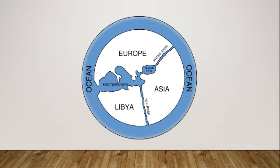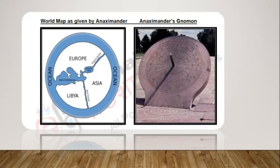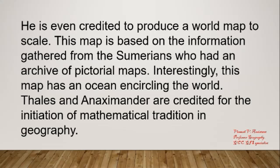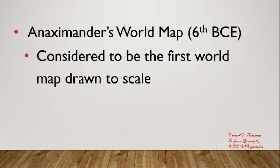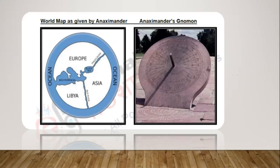This is Anaximander's world map — drawn before Christ. In it, Europe is shown, then Asia, then Libya — which is Africa — with a surrounding ocean. That was his concept of the world. This is the gnomon equipment. Anaximander is the father of mathematical geography, and he was the first person to provide a map drawn to scale. Those are the two important points you have to remember.